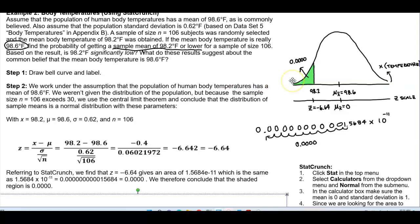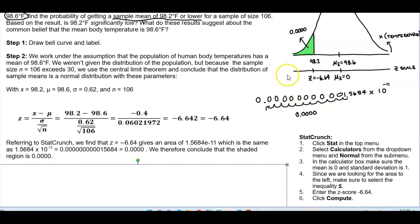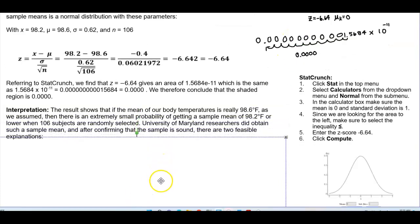Now, it may be a little bit different if you're using the table, because the table goes off the chart for this Z-score. So, technically, it's still 0.0000.